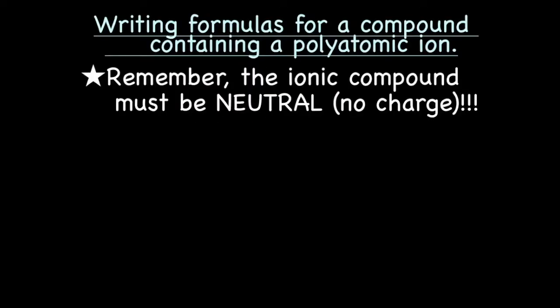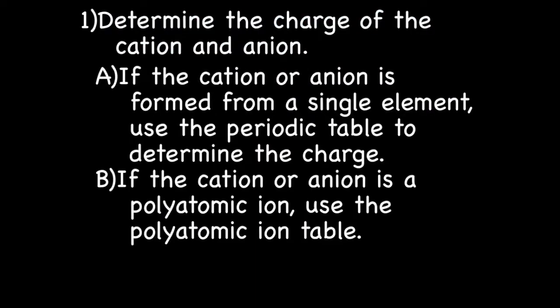Let's now write formulas for a compound containing a polyatomic ion. Remember, with an ionic compound, it must be neutral. No charge. Doesn't matter if we're talking about polyatomics. Simple ions involved. It doesn't matter. Ionic compounds must be neutral. First step, just like with simple ions, determine the charge of the cation and anion. If the cation or anion is formed from a single element, use the periodic table to determine the charge.